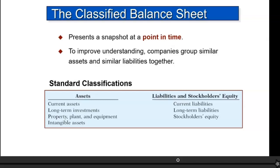We're going to classify the assets into four categories: current assets, long-term investments, property plant and equipment, and intangible assets. On the liability and shareholders' equity side, we're going to take the liabilities and break them into short-term and long-term — short-term being current, long-term being more than one year.